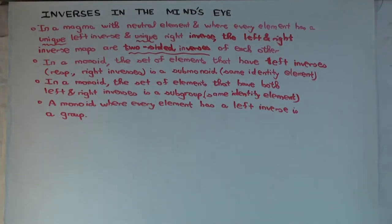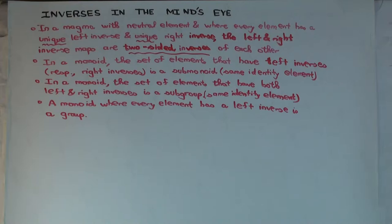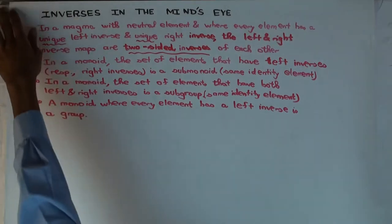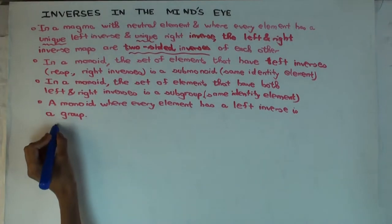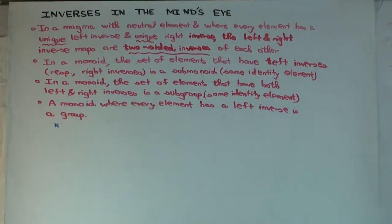What's the definition of a group in terms of a monoid? A monoid already means you have a binary operation, it's associative and has an identity element. A group is a monoid where every element has a two-sided inverse.